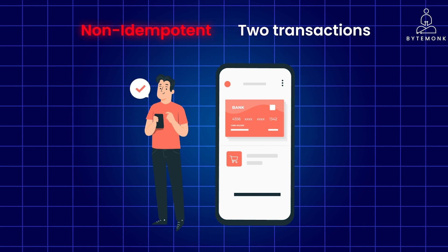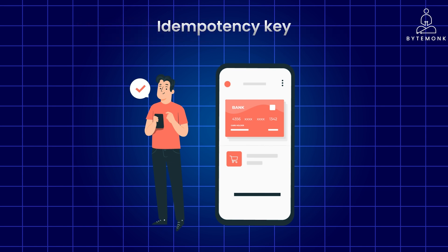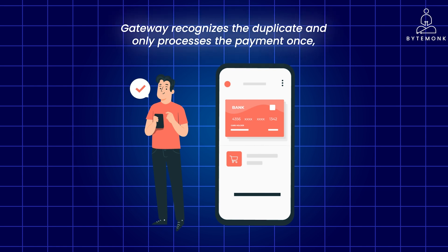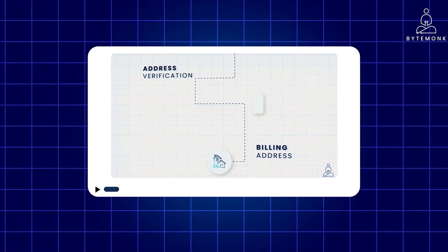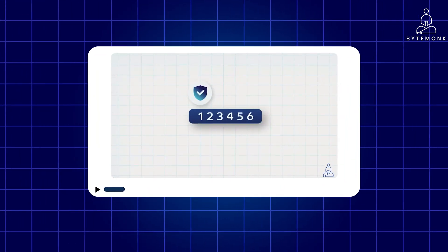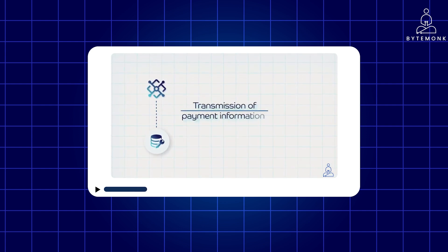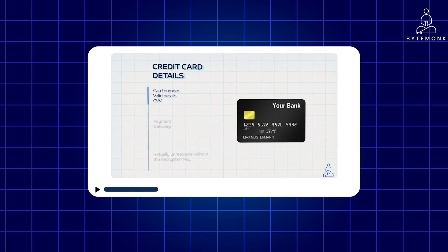To ensure it's idempotent, the payment gateway can generate an idempotency key for the transaction. If the same key is submitted multiple times, the gateway recognizes the duplicate and only processes the payment once, preventing accidental overcharges. In my video on payment gateways and payment processors, I have provided a detailed explanation of their functions, offering a step-by-step breakdown of what happens when a customer makes a payment from beginning to end.